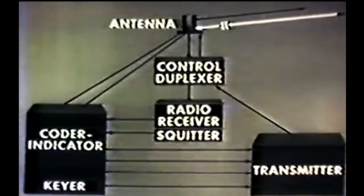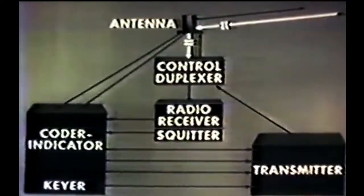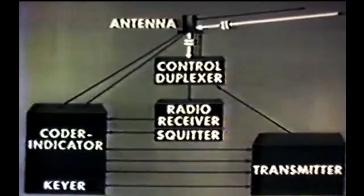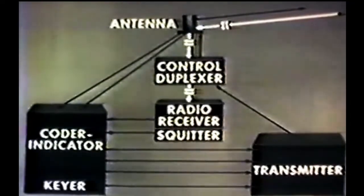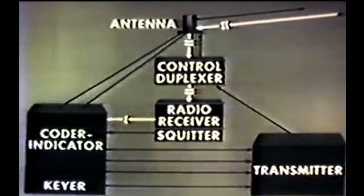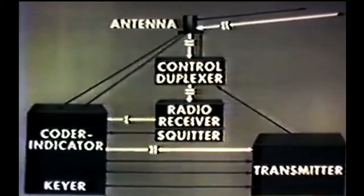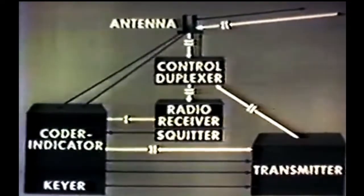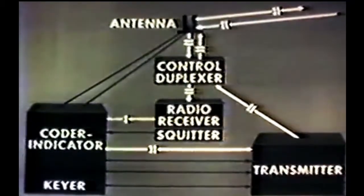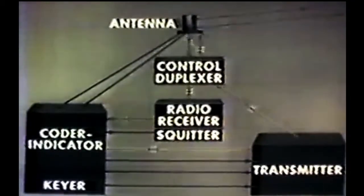The aircraft's distance-interrogation pulse pairs are received at the antenna and passed to the control duplexer, as shown in this block diagram. The duplexer permits simultaneous connection of transmitter and radio receiver to the same antenna. The duplexer channels the interrogation pulse pairs to the radio receiver. The radio receiver sends a single video pulse to the coder indicator for each pulse pair delivered to it. For each pulse to the coder indicator, a pulse pair goes to the transmitter, which in turn sends a pulse pair via the control duplexer and antenna to the aircraft. These distance-interrogation reply pulse pairs have the same pulse repetition rate as the interrogation pulse pairs themselves.